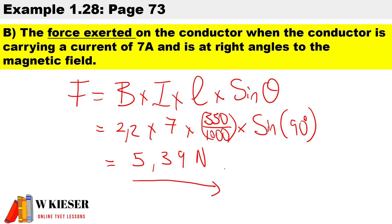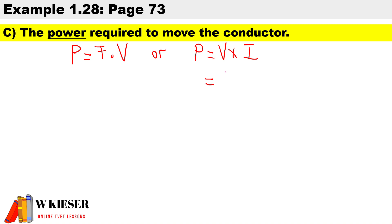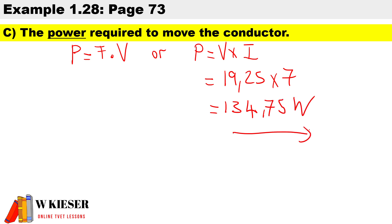Next, we calculate the power required to move the conductor. The formulas for power are: P = F × v, or P = V × I. Since we have the maximum EMF of 19.25 volts at 90 degrees, we multiply by the current of 7 amps, giving a power of 134.75 watts — that is the power required to move the conductor.